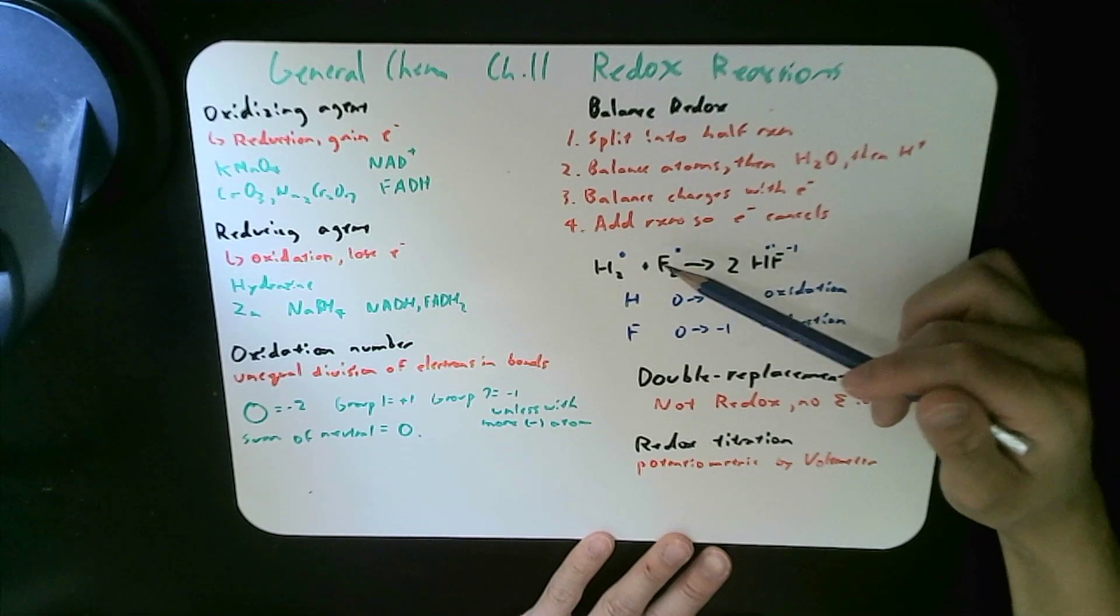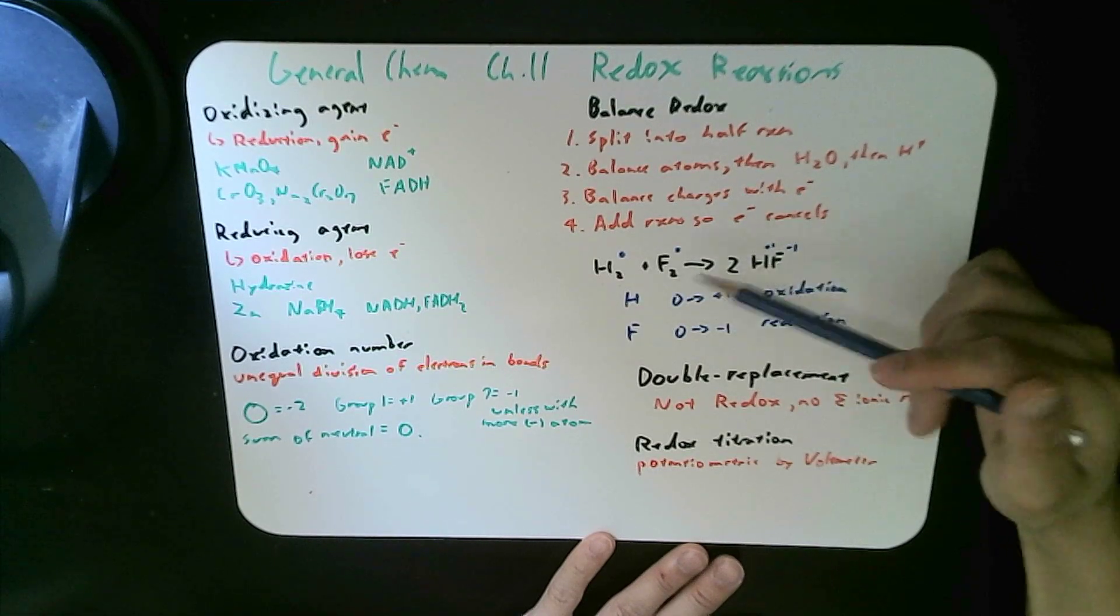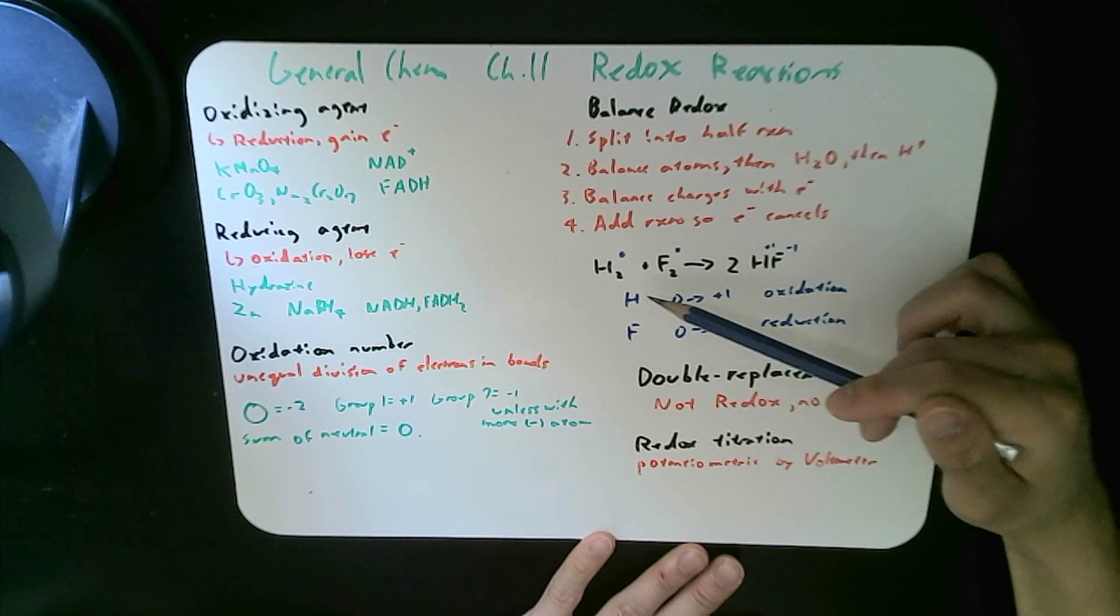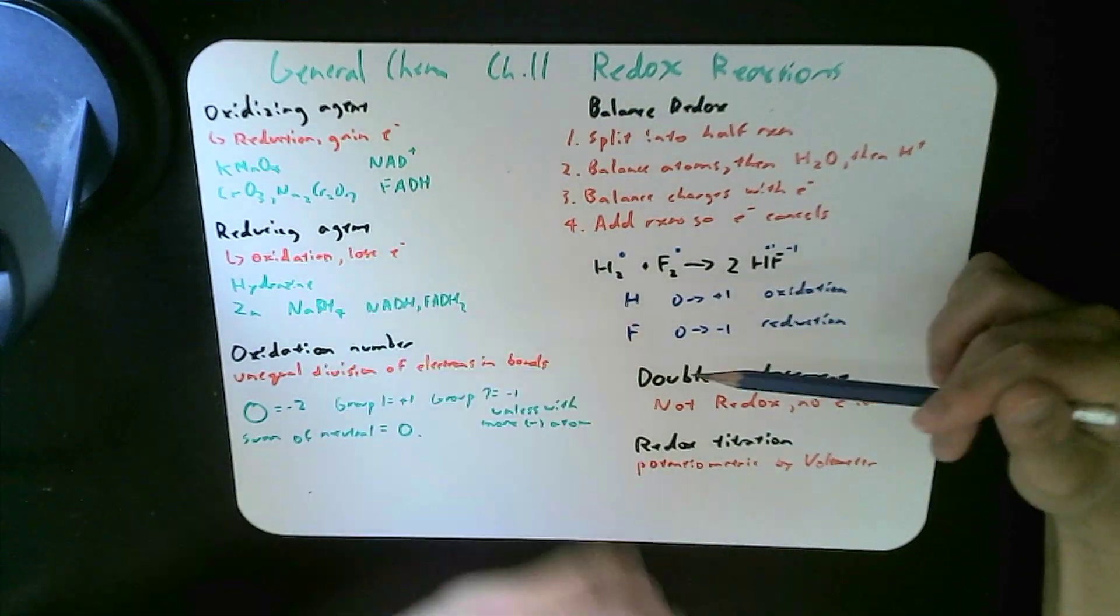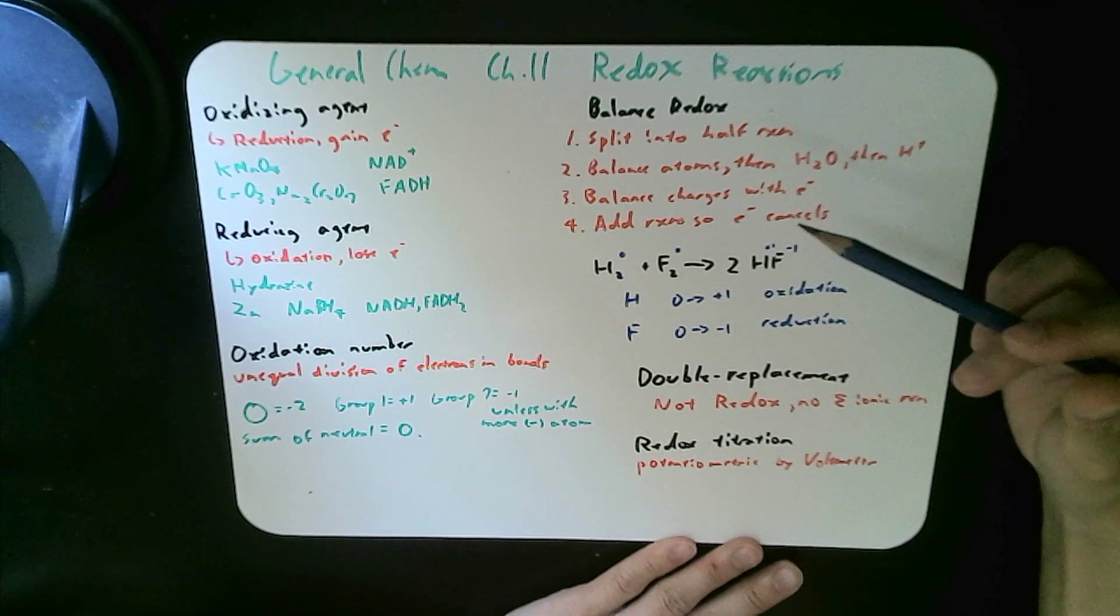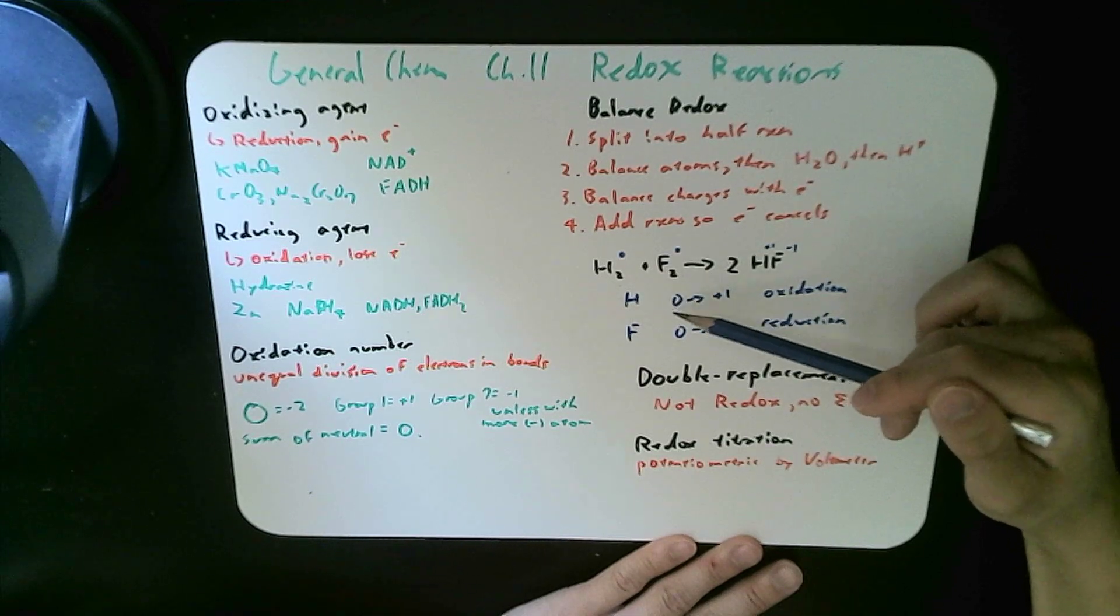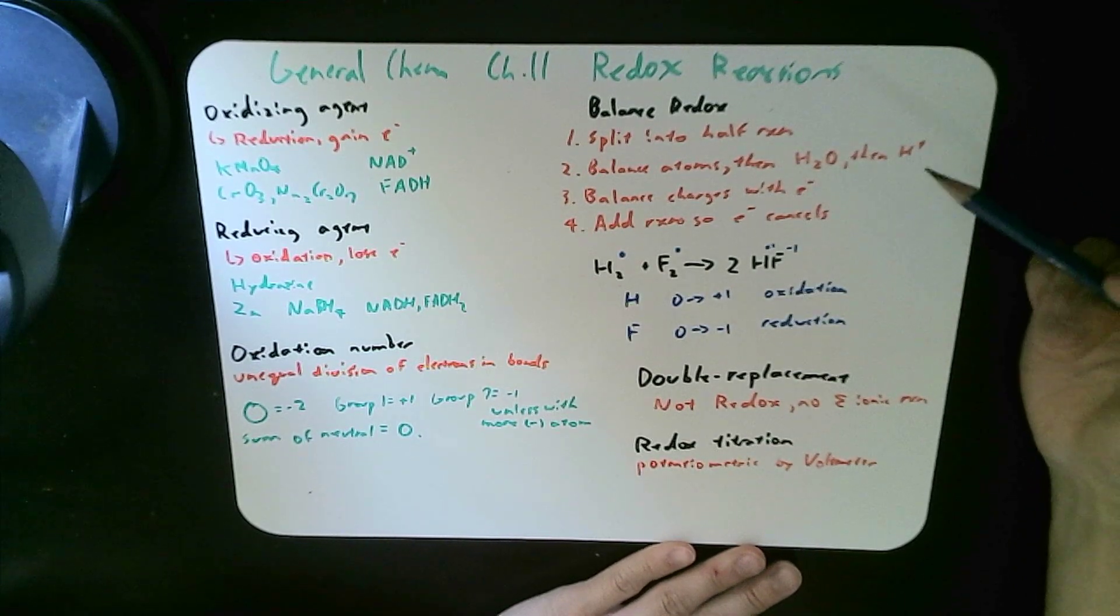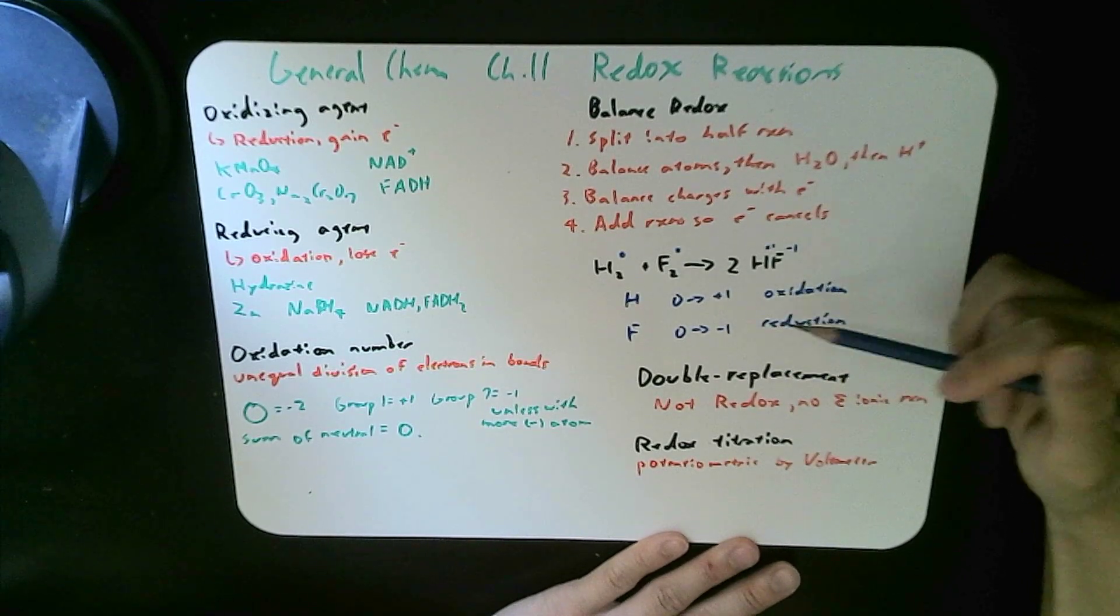For fluorine, I need to add two minus to this side to balance the two minus on this side. So by adding them together, the two electrons cancel out, and we see that hydrogen has undergone oxidation by losing the electron, changing oxidation state from zero to plus one, losing negative turns positive, and fluorine accepted that electron and reduced.